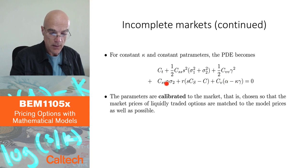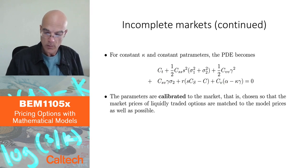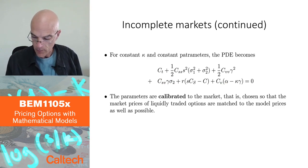And then I have the mixed term with the mixed second derivative times the, in this case, sigma_2 gamma because sigma_2 gamma was the correlation.